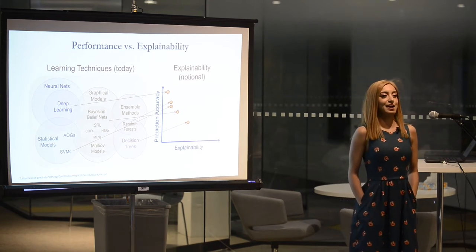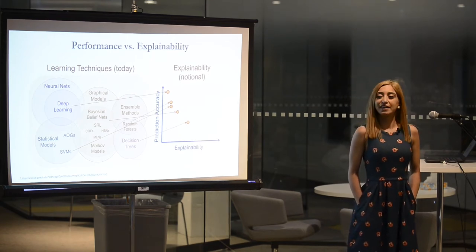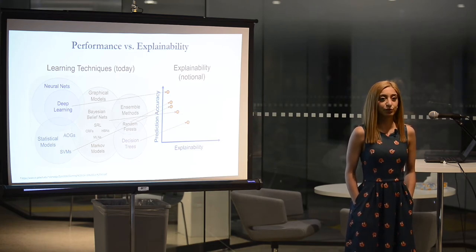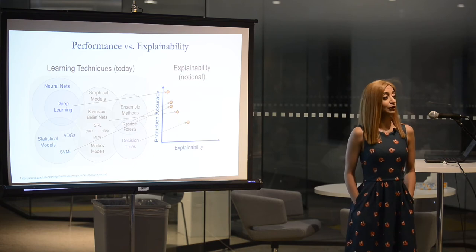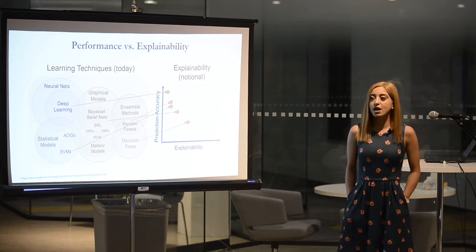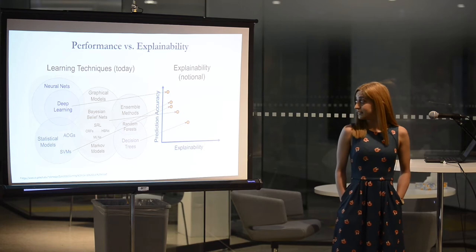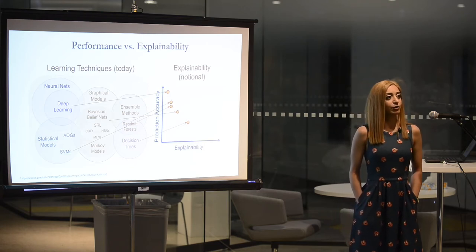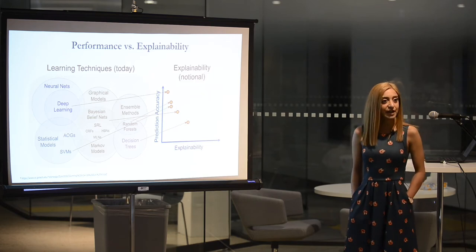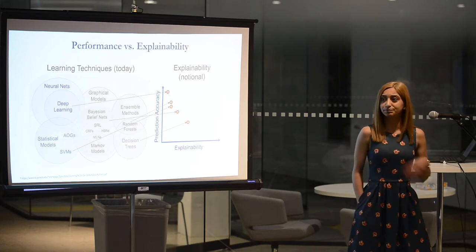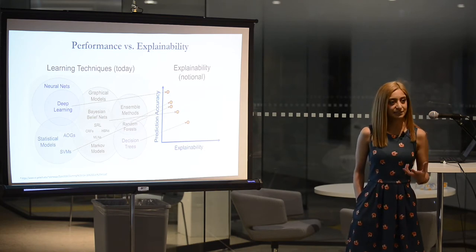We don't have a shortage of advanced, sophisticated, complex machine learning or deep learning algorithms. The algorithms are out there — lots of packages and libraries. You can grab anything and make it work. But we also know that as these algorithms and models increase in complexity, sophistication, or prediction accuracy, they start losing explainability. They become black boxes, and that is a big limitation.